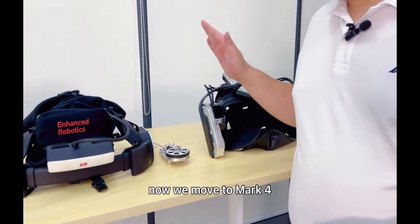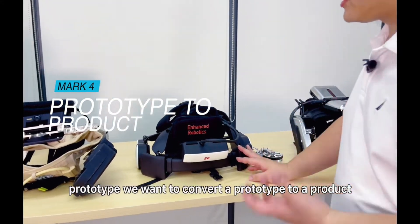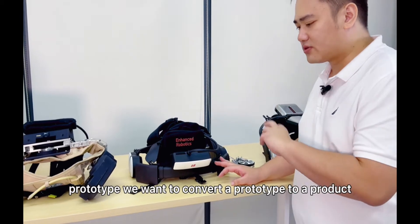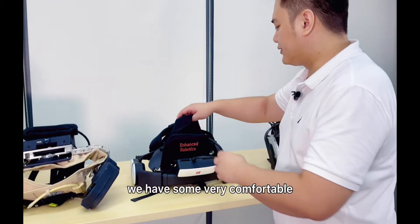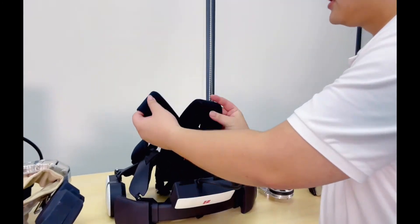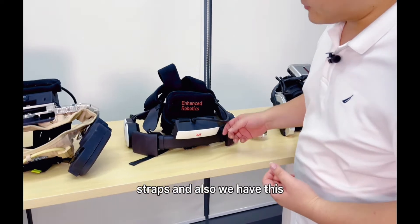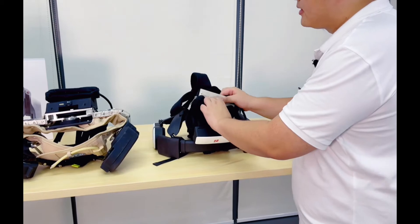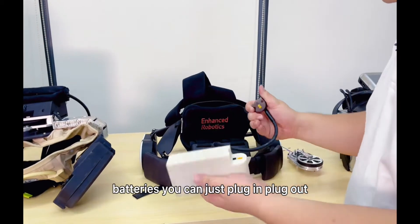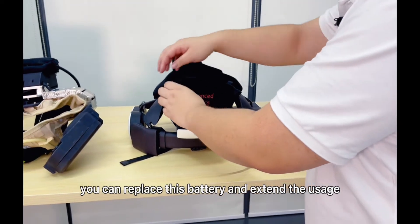Now we move to Mach 4. Mach 4 is the first prototype we want to convert a prototype to a product. So you can see we do some industrial design. We have some very comfortable straps. And also, we have these batteries. The previous one, you cannot replace the battery. But this one, you can. Batteries, you can just plug in, plug out. You can replace this battery and extend the usage.